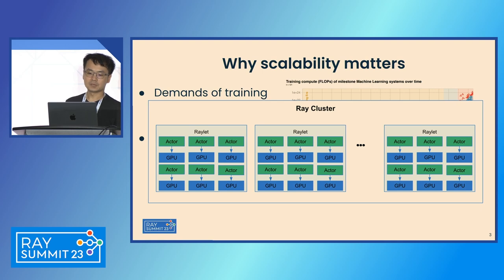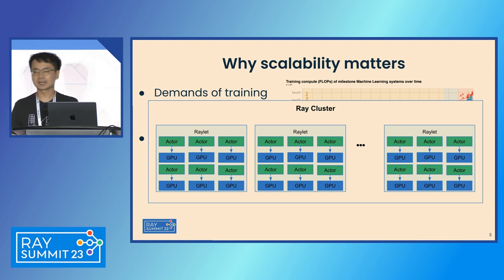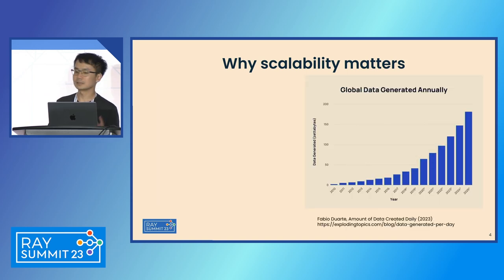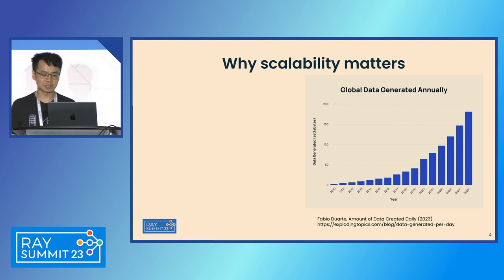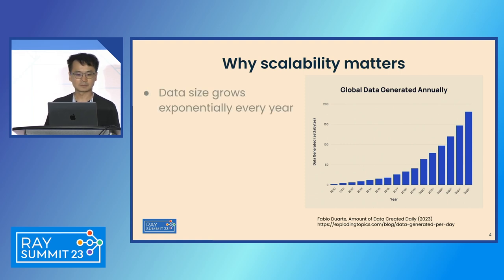They have a very big Ray cluster, and in each of the nodes there are actors. These actors coordinate with each other to finish the training. Besides this, the data generated every year increases exponentially. Nowadays, every year, there are more than 100 zettabytes of data generated.